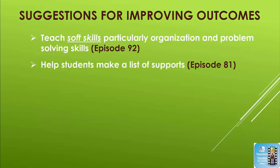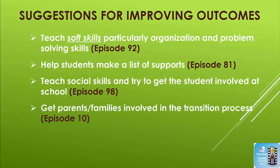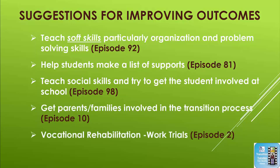Help students make a list of supports. Teach social skills and try to get the student involved at school. Get parents and family involved in the transition process. Include outside agencies such as vocational rehabilitation — many times they can offer work trials to see if certain kinds of work are a good fit for the student, and they could have suggestions for employer education to help change perceptions of people with traumatic brain injuries.